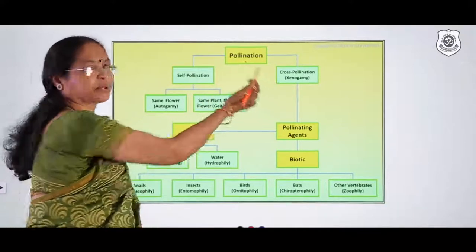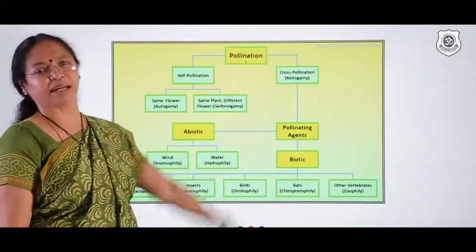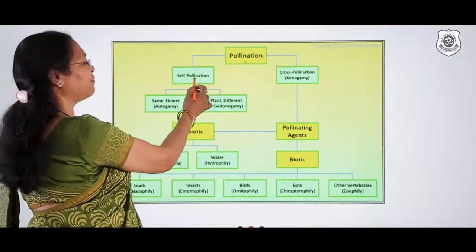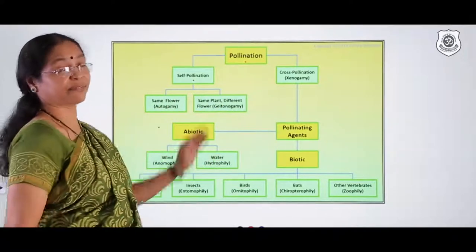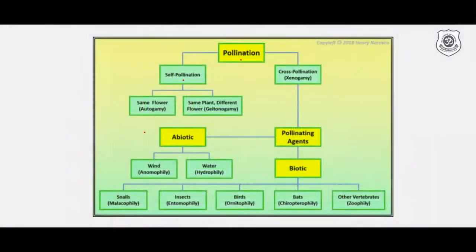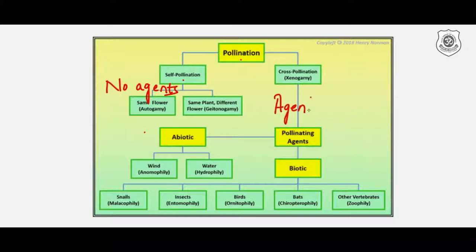Wherever there is a pine garden and the wind blows, it looks like sulfur rain — the wind carries enormous amounts of pollen grains. That is wind pollination. Water pollination occurs in aquatic plants such as Vallisneria, where the waves carry the pollen grains. These are abiotic agents.